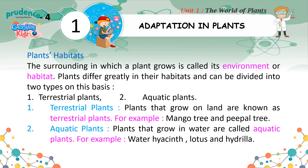2. Aquatic Plants — plants that grow in water are called aquatic plants. For example, water hyacinth, lotus and hydrilla.